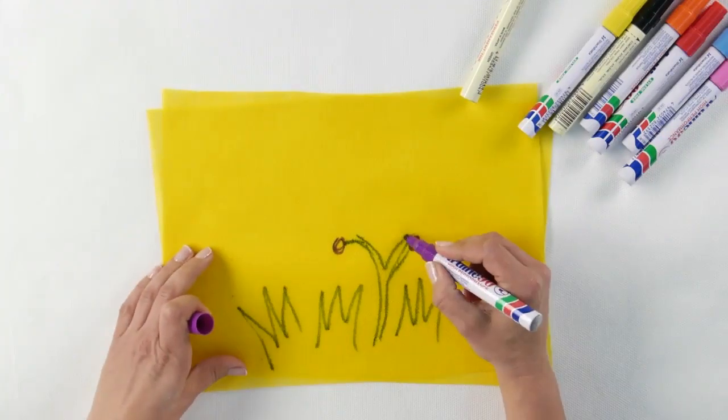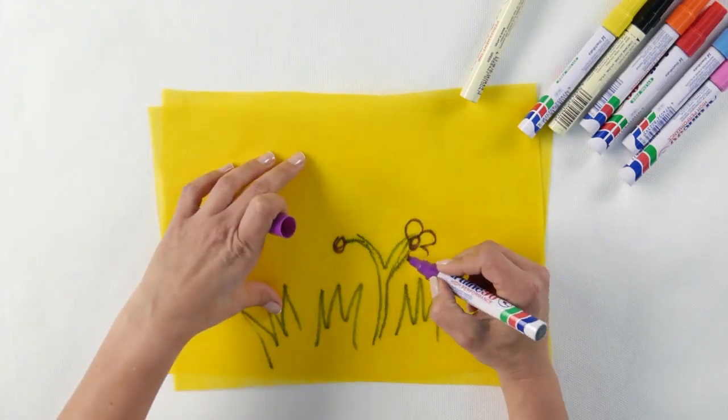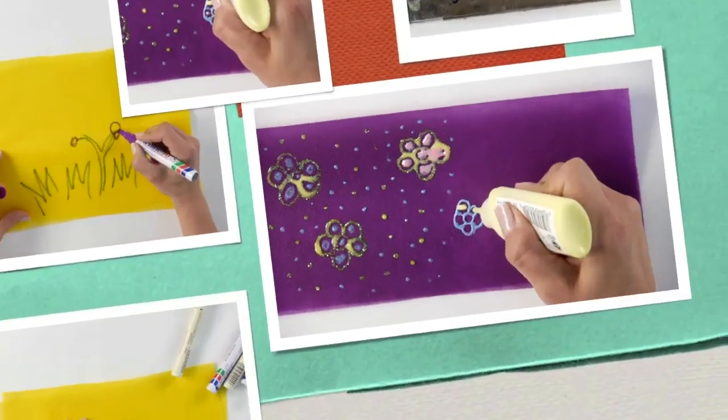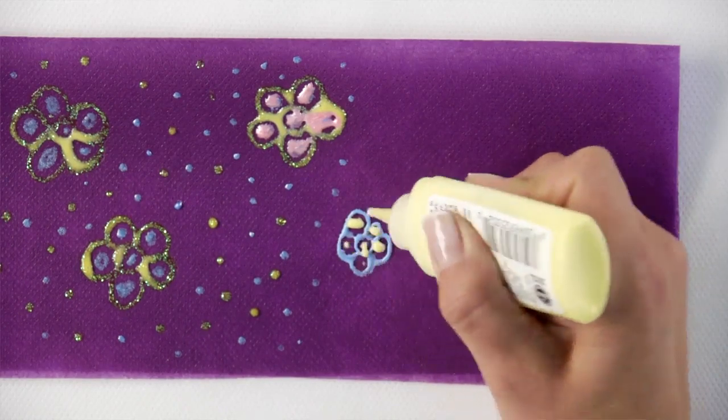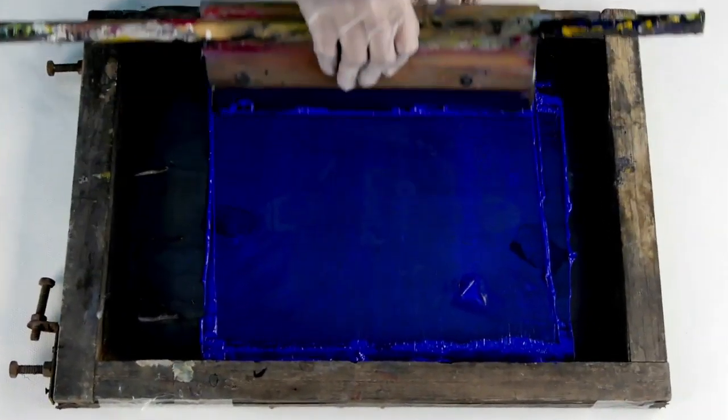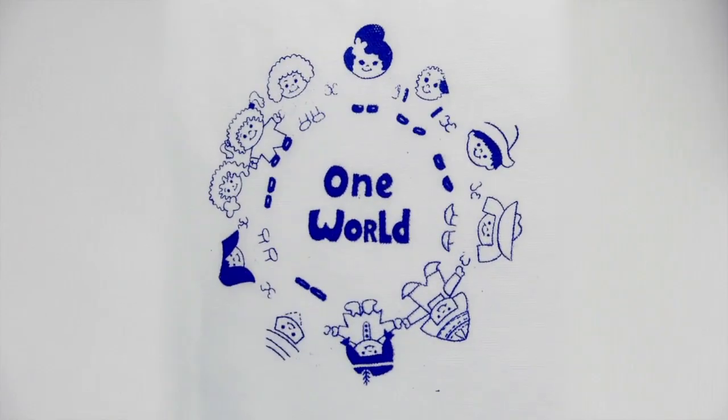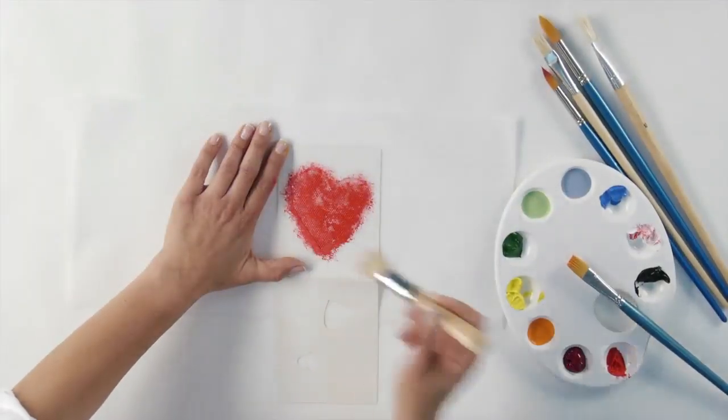Coloring. The possibilities for coloring SmartFab are almost endless. You can use markers and paints. You can use gouache, tempera, or acrylic. And you can even silk screen SmartFab or use stencils with a sponge and acrylic paint.